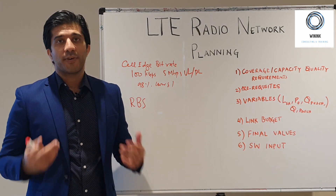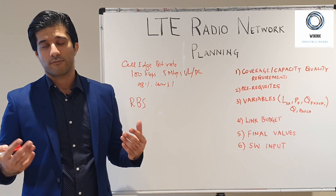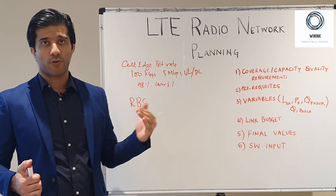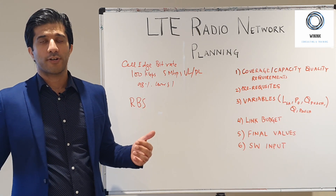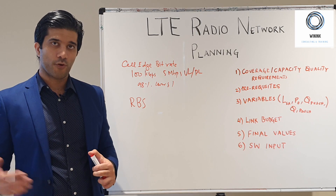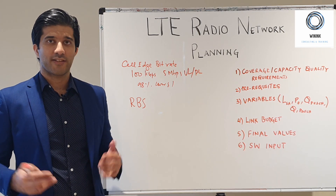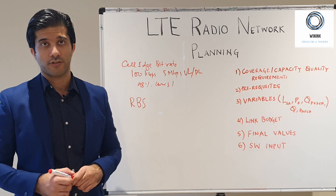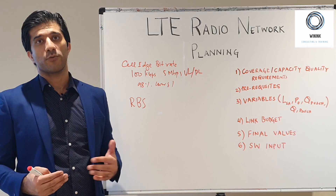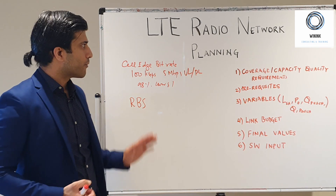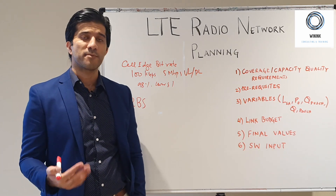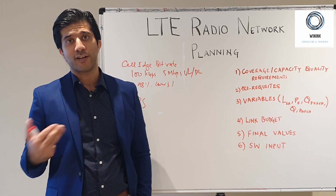The second step is prerequisites. The prerequisites include the transmitting power of your receiver and transmitter. In a network, the transmitting power of the transmitter is your radio base station, and the transmitting power of your mobile station is used for uplink. For uplink you take the mobile station's transmit power, and for downlink you take the radio base station's transmit power. This is a constant — whether you're using 20 W, 40 W, or 60 W, that will be a fixed value.